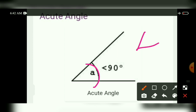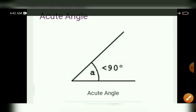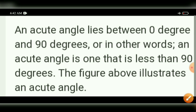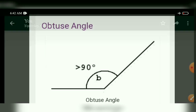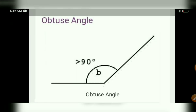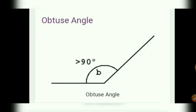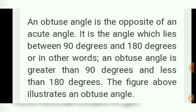Types of angle. Acute angle: an angle whose measure is less than 90 degrees is said to be an acute angle. Obtuse angle: an angle whose measure is greater than 90 degrees and less than 180 degrees is said to be an obtuse angle.